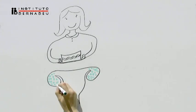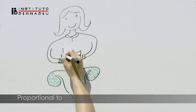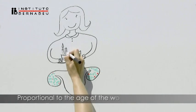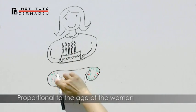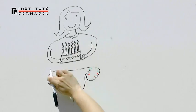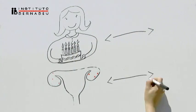The ovarian reserve is inversely proportional to the age of the woman, so that the older the woman, the lower the ovarian reserve and egg quality.